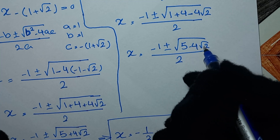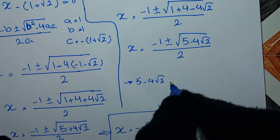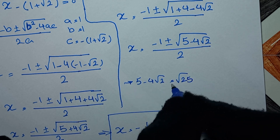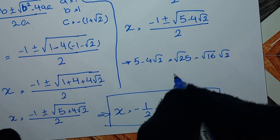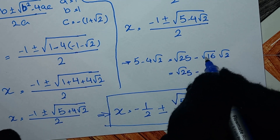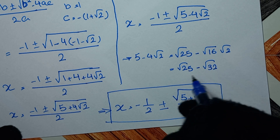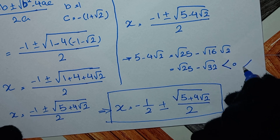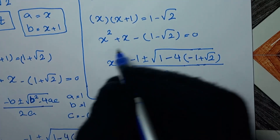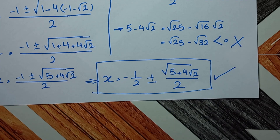We check: is 5 - 4√2 less than 0? We write 5 as √25 and 4√2 as √32. Since 25 < 32, we have √25 < √32, so 5 - 4√2 < 0. The discriminant is negative, so there is no real solution for this case. We reject this value of t. The final answer is x = -1/2 ± √(5 + 4√2) / 2. Thank you for watching, don't forget to like and subscribe!